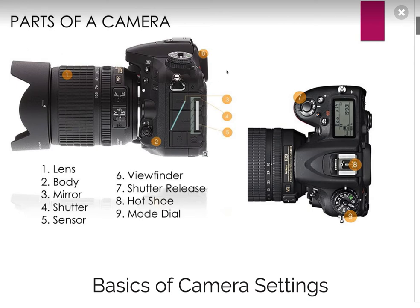We also have the viewfinder right here, the shutter release which is the button you hit to take the photo, and the hot shoe — which is where you put a flash or other devices. For example, cameras that don't come with Wi-Fi can have a Wi-Fi receiver placed there. And then there's the mode dial, which controls the different modes you can shoot in.